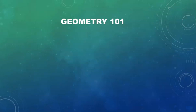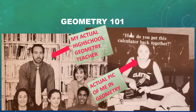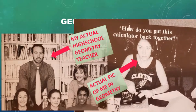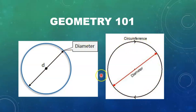Before we get started, a quick side note from high school geometry class. Just a quick refresher of diameter and circumference. Diameter is going to be a straight line that passes through the center of an object, usually a circle. And a circumference is going to be a measurement that goes around that outer perimeter of the circle or object that you're measuring.